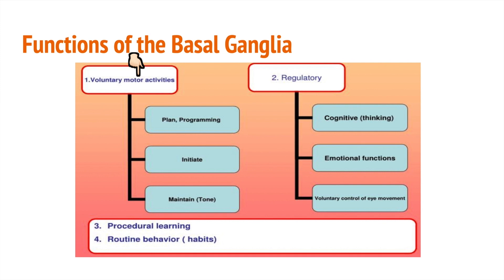Let's talk about voluntary motor activities. To execute any type of movement, two things must happen at once: the muscles that initiate movement must contract, and the muscles that inhibit movement must relax. The basal ganglia controls that process — they are in charge of directing which muscles should activate and which need to relax. For example, to pick up a fork, you must extend your arm first, which means your bicep muscle cannot fire while this is happening, otherwise your arm would just contract. The basal ganglia will send signals to your bicep telling it to relax, allowing you to extend your arm easily.